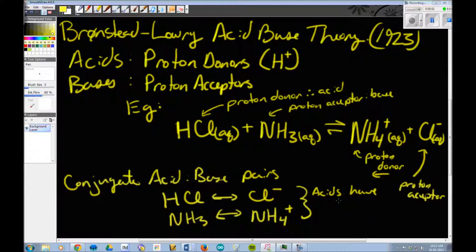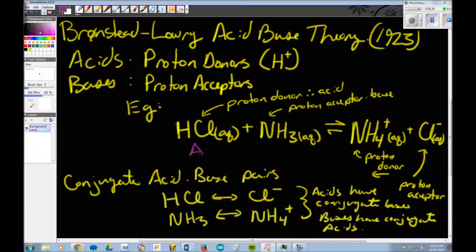Acids have conjugate bases. Bases have conjugate acids. So we can go through a reaction that looks like this and we can mark off what's what. There's acid one, and there is its conjugate base. Here's base two and its conjugate acid. Does that kind of make sense to you guys? It's just a little more in-depth way of looking at acids and bases than we've had before.